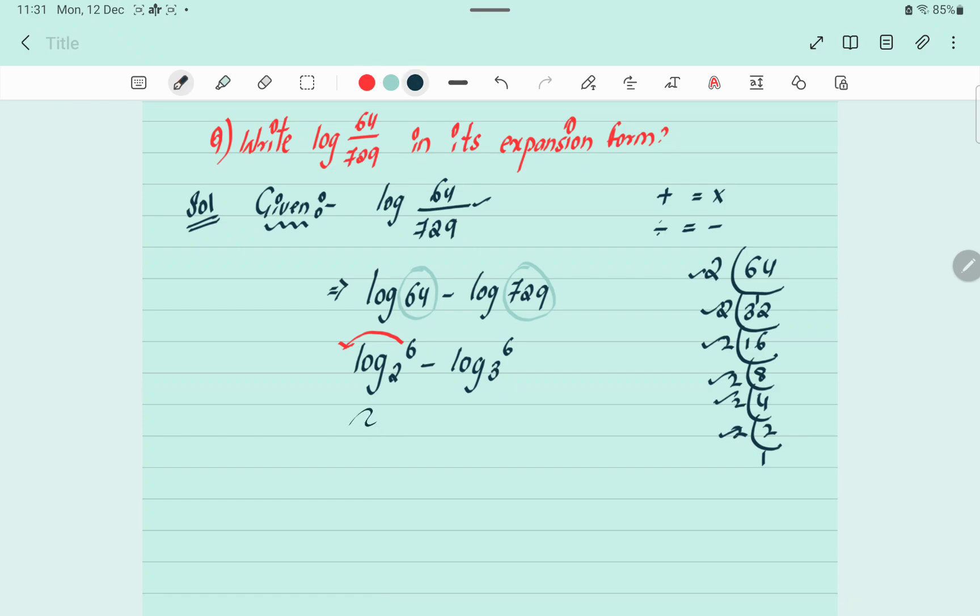So 6 log 2 minus 6 log 3. So 6 and 6 I am taking common here.